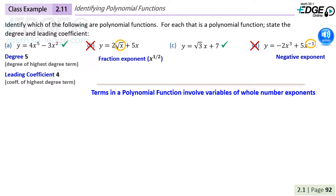Example c, which I haven't animated here, has a degree of 1, because that is the invisible exponent on the x, and a lead coefficient of square root of 3.